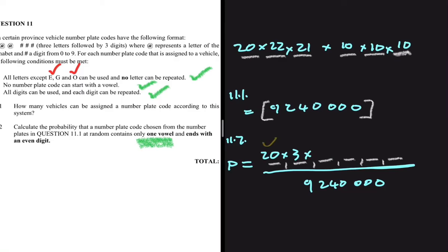We cannot place 21 letters in the third position, because our condition requires only one vowel. If we used one vowel in the second position, we cannot place a vowel in the third position anymore. So we subtract the remaining two vowels, leaving only 19 letters that can go in the third position.